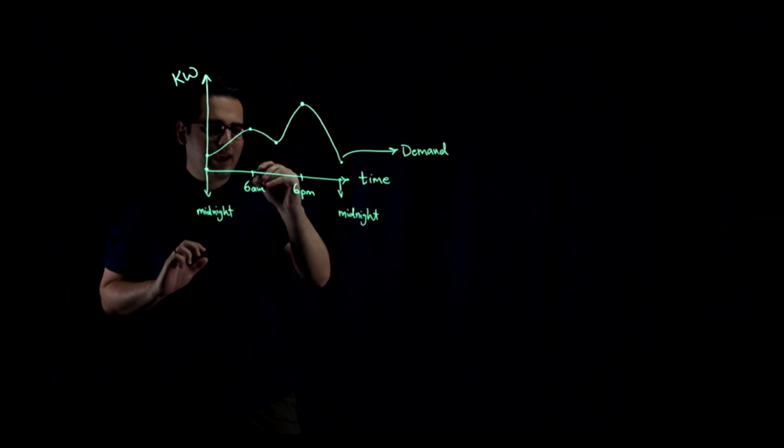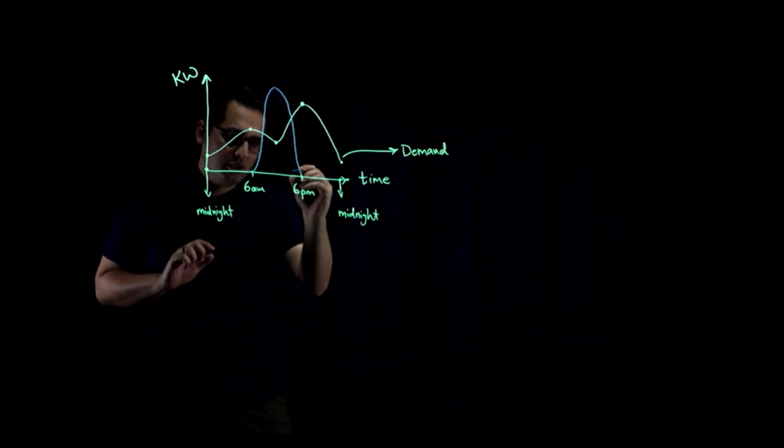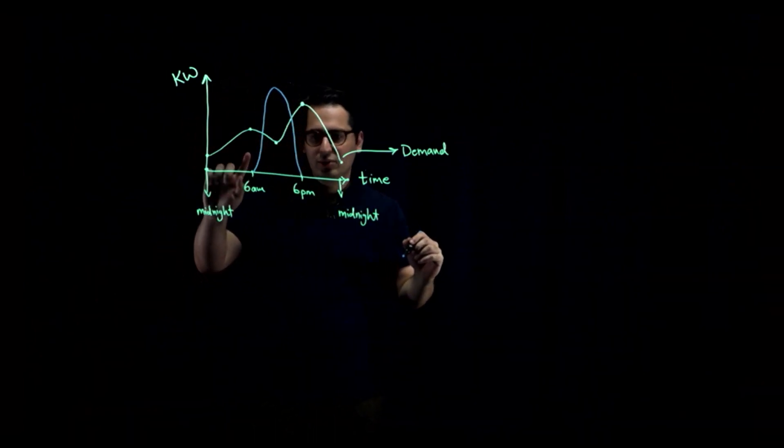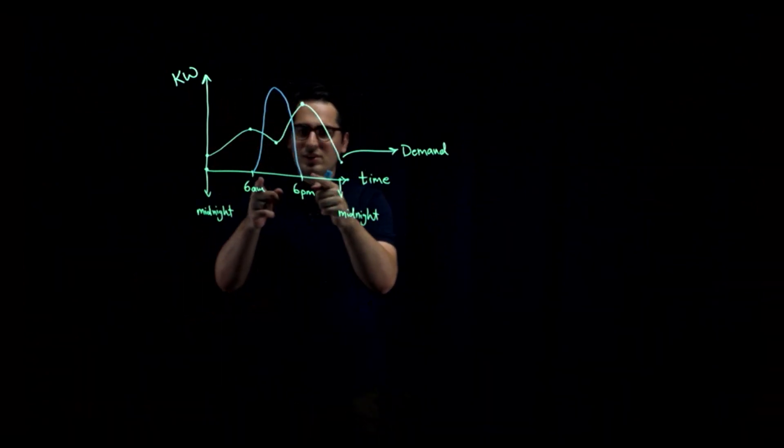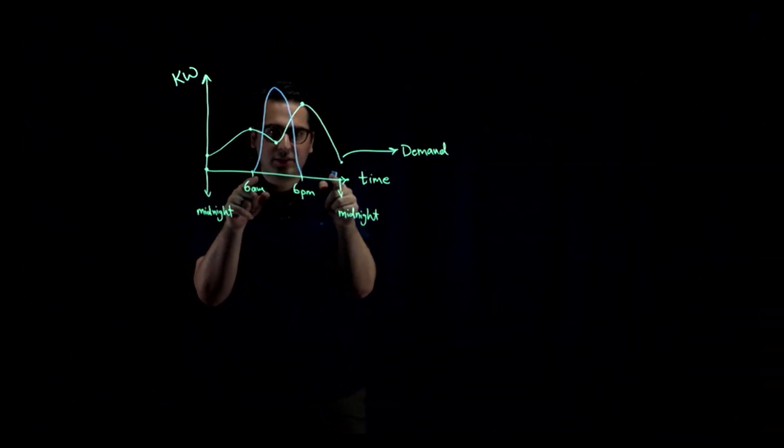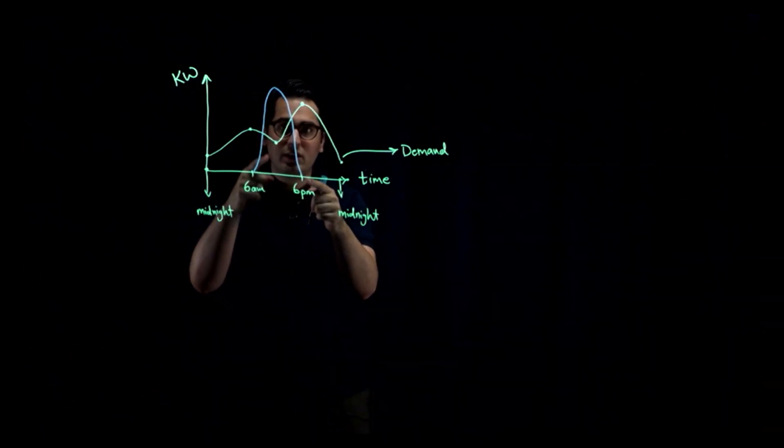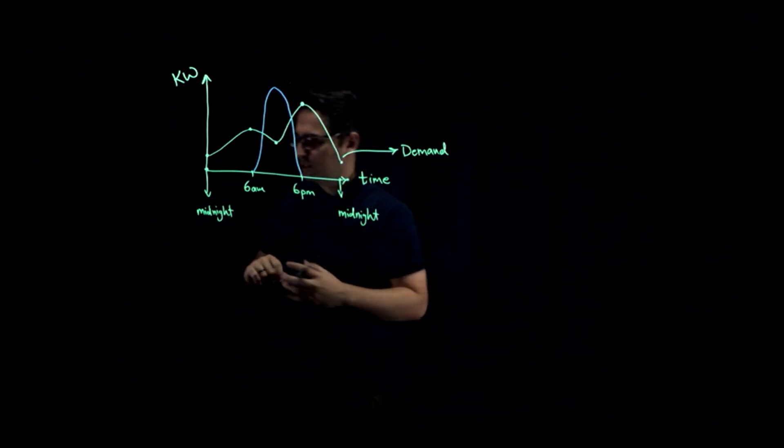So let's say that the generation of solar electricity is something like this. 6 a.m. is when sun goes up and 6 p.m. is when sun goes down. You can see that it is not evenly distributed at different times. Whenever you have sun, you have electricity. But if you do not have the sun, electricity is not there.